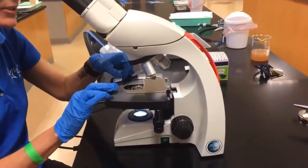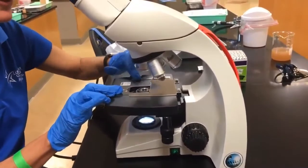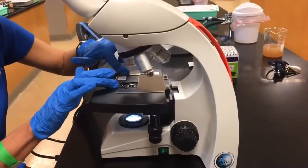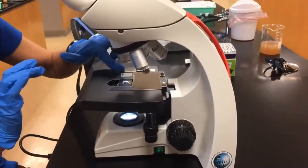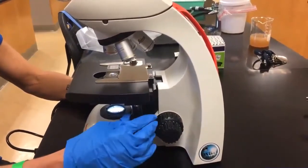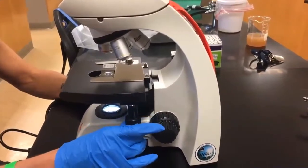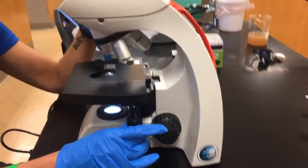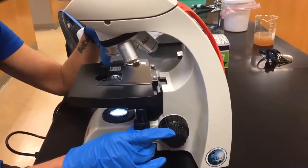You're going to place it on the stage, and you want to gently move this stage arm out of the way, slide it in place, and gently let it go. Remember you have your mechanical stage apparatus that you can move and position your specimen. You want to center that circle over the light circle.